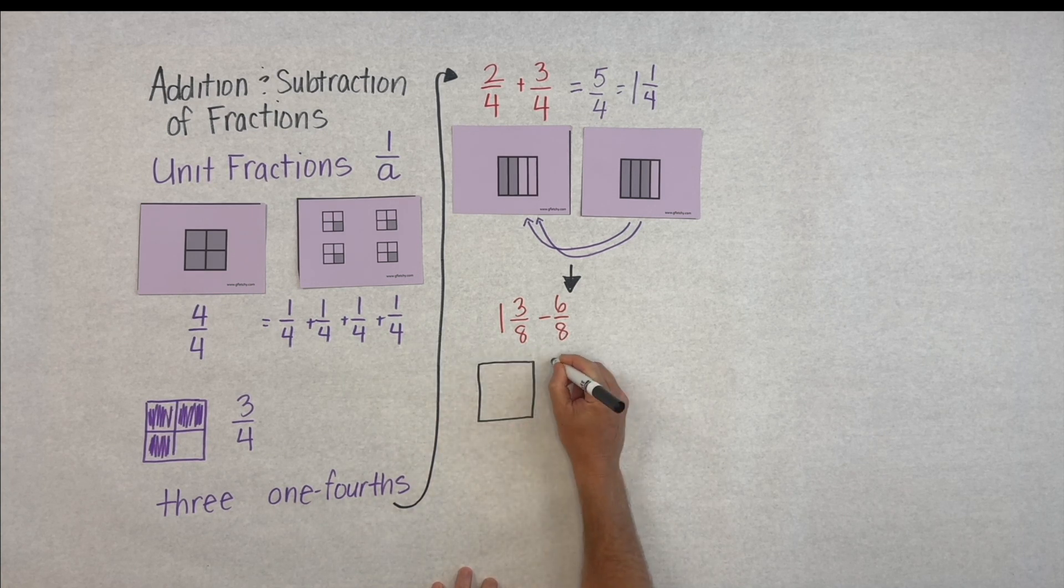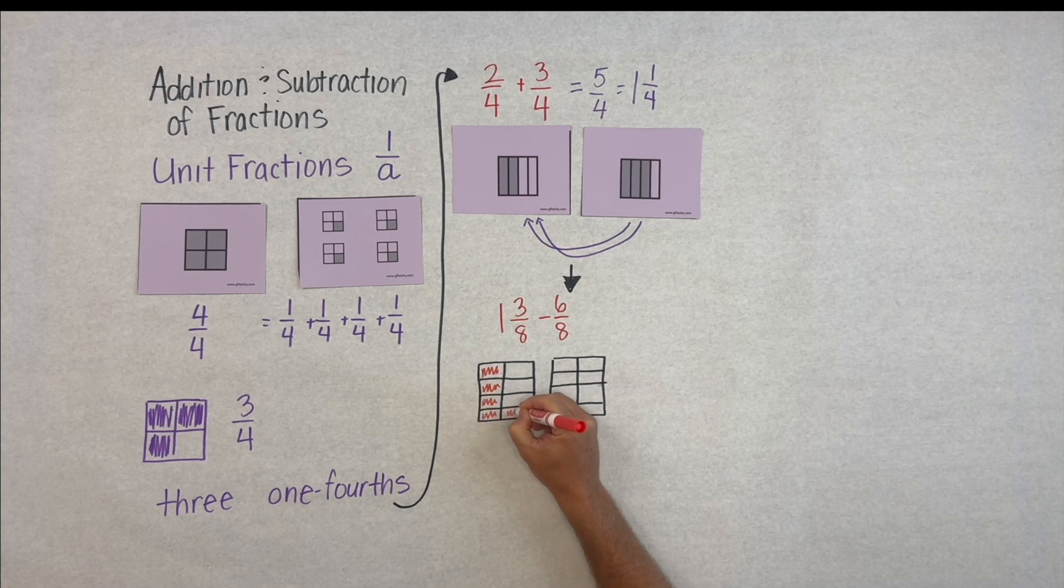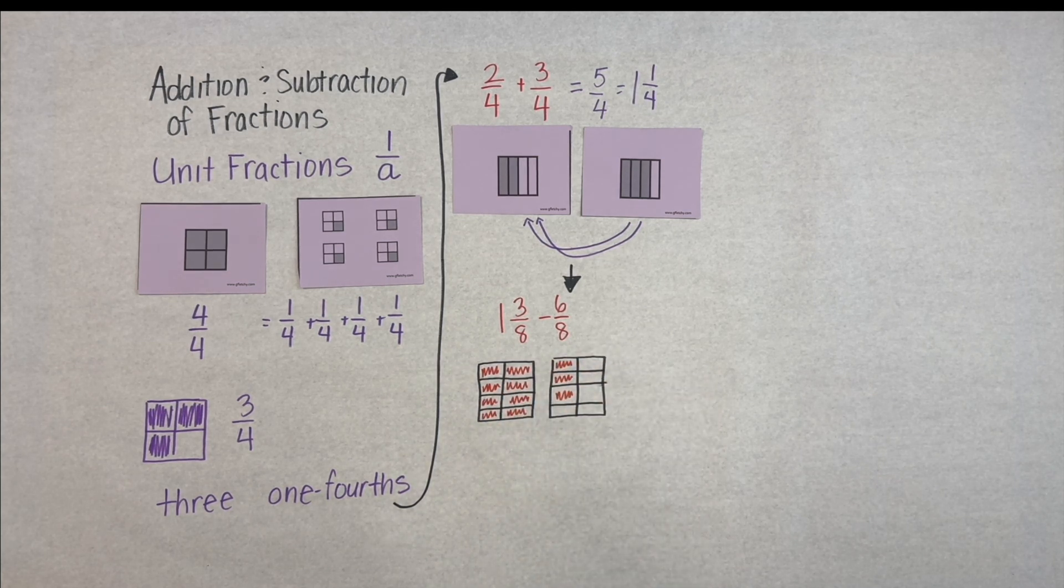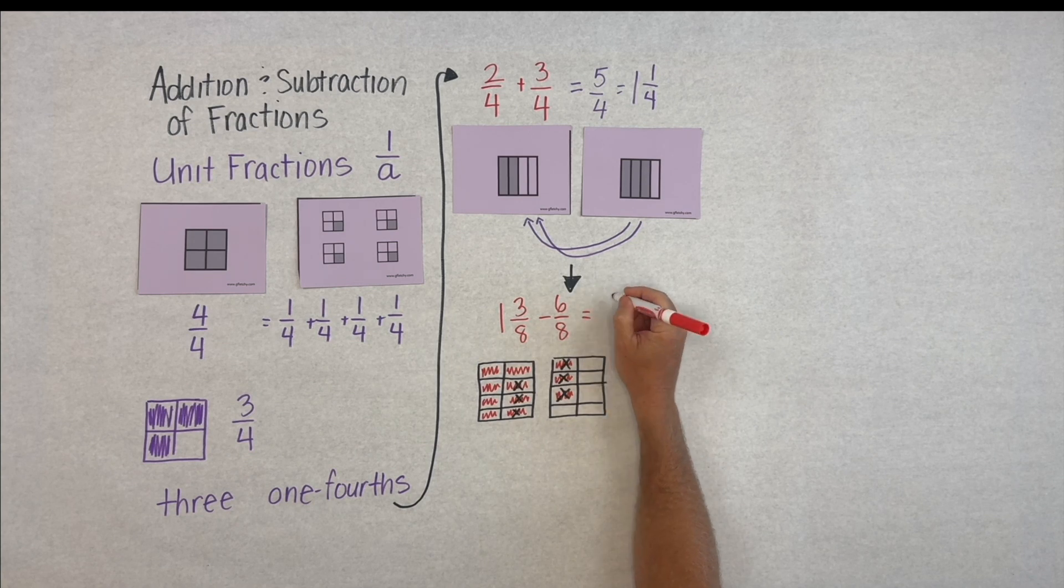Let's try this with mixed numbers: one and three-eighths minus six-eighths. Well there's no need to change the mixed number into an improper fraction if we can see them as unit fractions. Here we'll just remove six one-eighths and we're left with five-eighths.